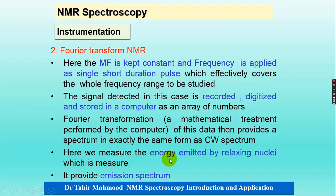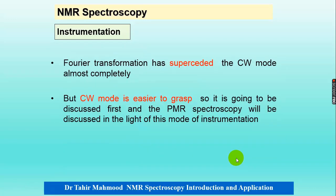In Fourier transform NMR, we measure the energy emitted by relaxing nuclei. When nuclei convert from a higher energy state to a lower state, they emit energy, and that energy is measured. Fourier transform has superseded continuous wave because we measure the whole range in FT NMR. However, continuous wave mode will be explained here as it is easier for understanding early instrumentation.